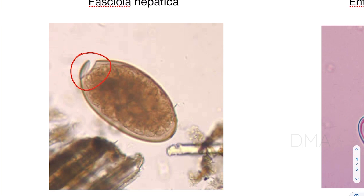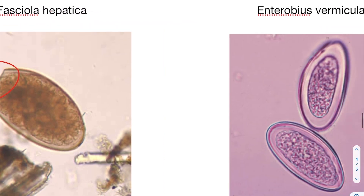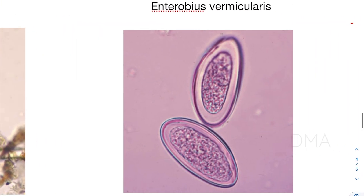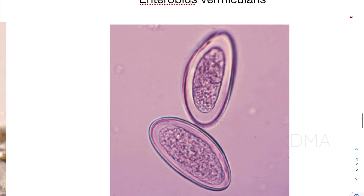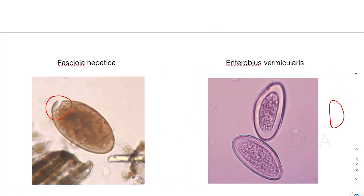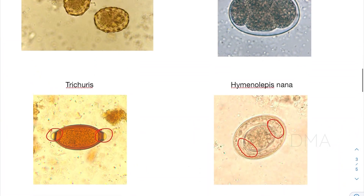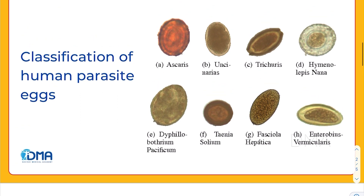Then comes Enterobius vermicularis. The Enterobius vermicularis egg is very transparent, and the most distinguishing feature is its shape — it is a plano-convex shape. On one side it is a flat plane, and on the other side it curves into a convex shape.